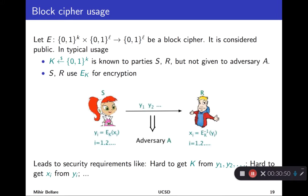The adversary sees all these ciphertexts going by and we'd like it to have a hard time figuring out the plaintexts x_i. Perhaps more basic: it should have a hard time figuring out what the key is. The first security goal for a block cipher is that if you see some outputs, you have a hard time figuring out the key — because if it had the key, it could recover all the plaintexts. So a block cipher shouldn't allow easy key recovery, and shouldn't allow easy inversion of outputs to inputs without the key.